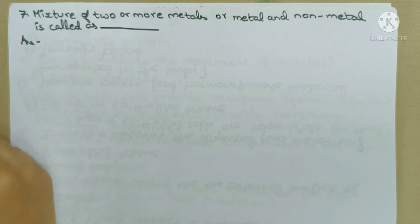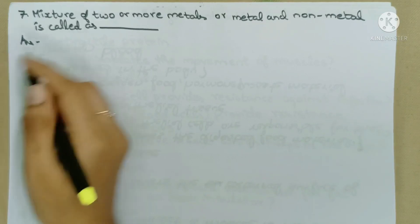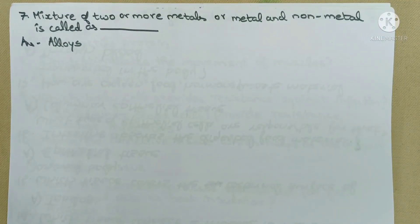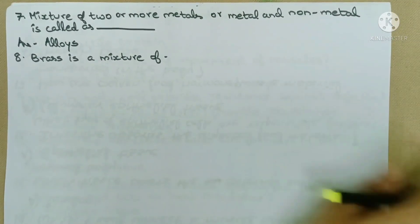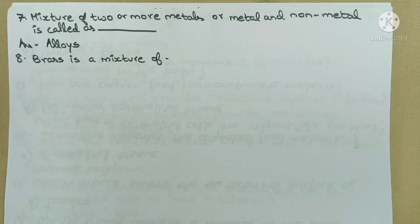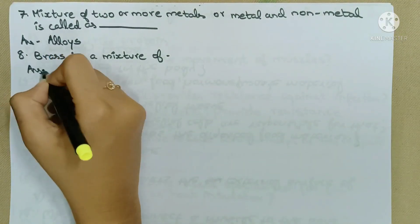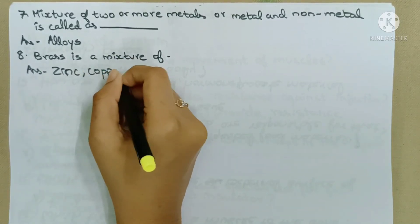Next question: The mixture of two or more metals, or metal and non-metal, is called alloys. Next question: Brass is a mixture of what and what? The brass alloy is a mixture of zinc and copper — zinc plus copper mixed together forms brass.